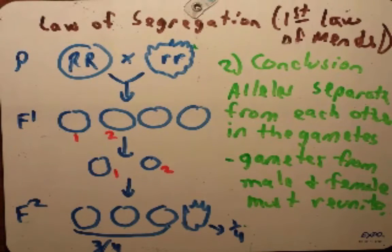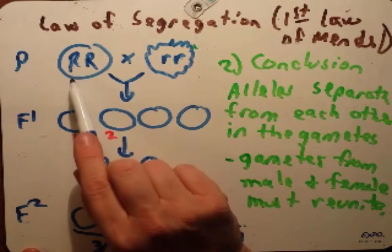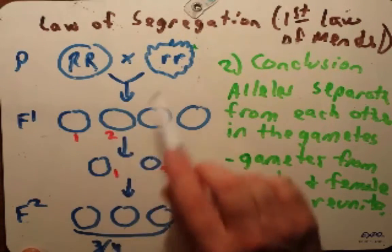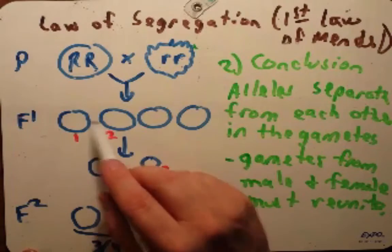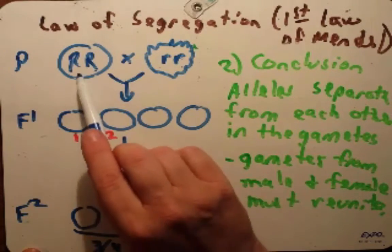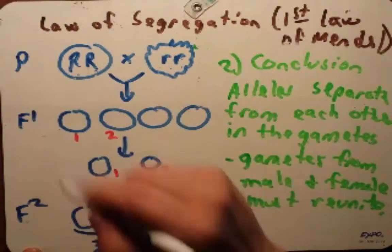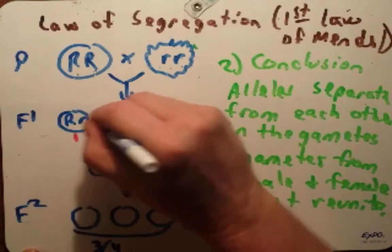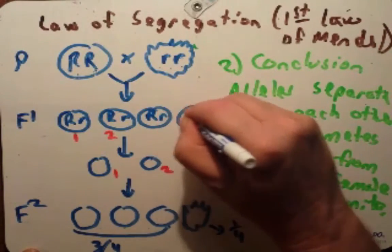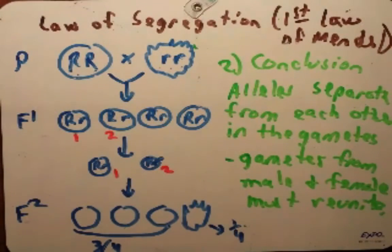Gametes from male and female must unite. If he knew this from these conclusions, then he knew that the original parents had to be big R, big R and little r, little r. And if these were correct, then the progeny here, if you're going to get half from this parent and half from this parent, it must be big R, little r, big R, little r, and big R, little r.